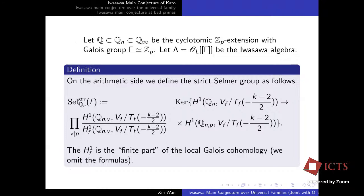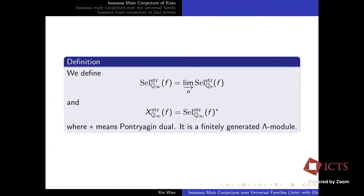For the p-adic place, we require the localization to be trivial. That's why we call it the strict Selmer group — the p-adic localization is strictly zero. We can also define the Selmer group over Q_∞ to be the direct limit of the strict Selmer group over Q_n, where the transition map is given by the restriction map. We then define the dual Selmer group X^{strict}(Q_∞) to be the Pontryagin dual of the strict Selmer group over Q_∞.